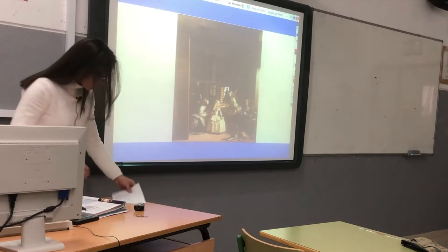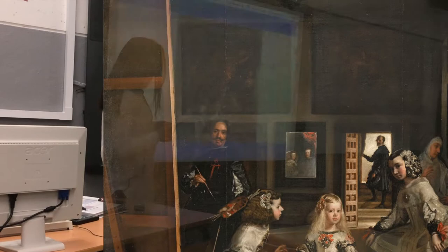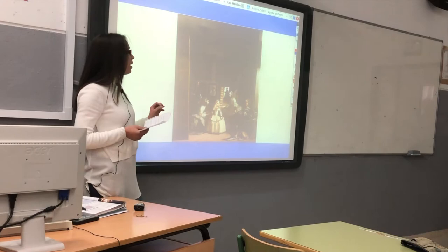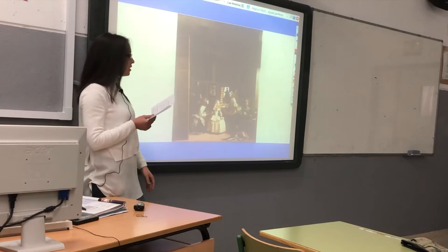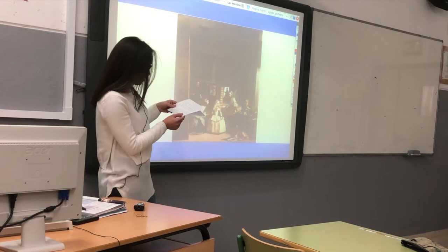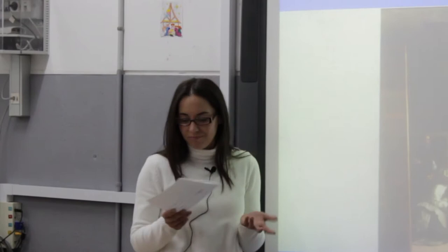This is the painting. It was painted by Diego Velázquez in 1656, but the date is not clear — some people say it's before and others say it's later, but the date we can see in the Museo del Prado is 1656. This painting was an order of the kings for Diego, and the real name of the painting is 'The Family of Felipe IV.'